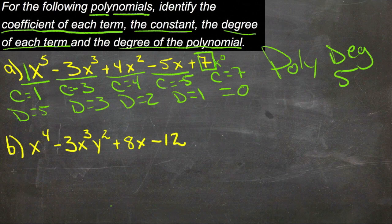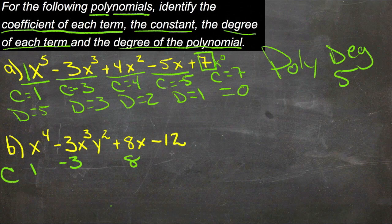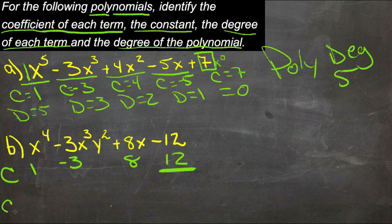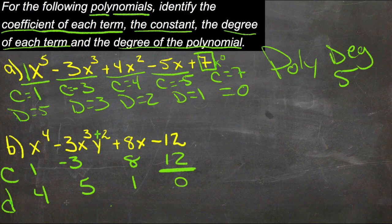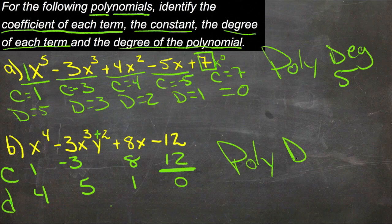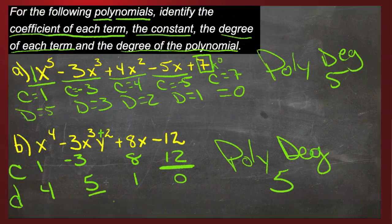In our second example, we have coefficients of 1, negative 3, 8, and 12. And 12 is also our constant term. Then our degrees are 4. And here the degree is 5 because it's a degree of 3 for the x plus 2 for the y, so the degree of this term is 5. Here it's 1, and here it's 0. So the degree of our polynomial is the highest degree in the polynomial — in this case, again, 5 because 5 is the highest degree.